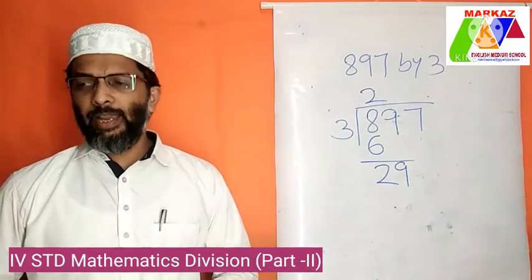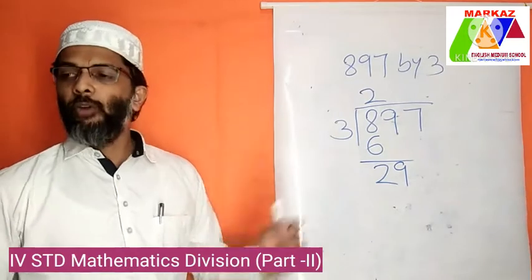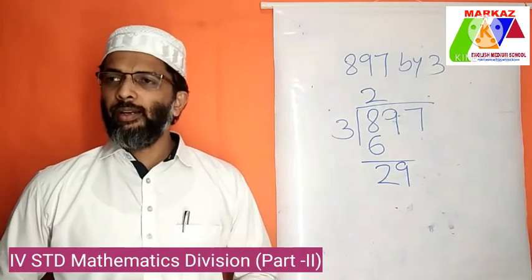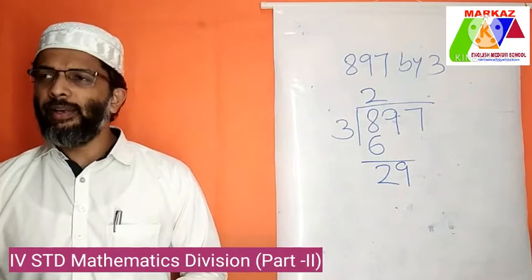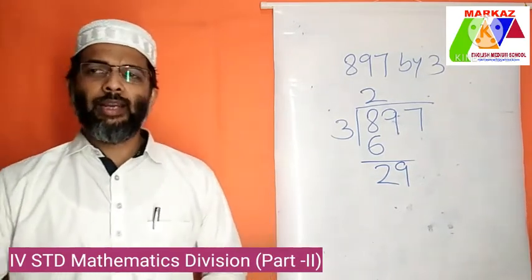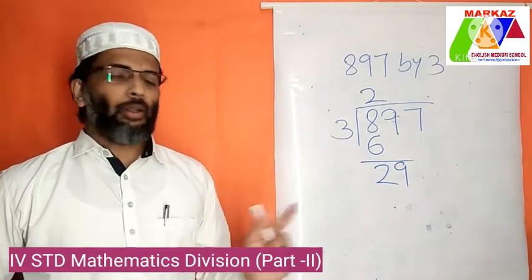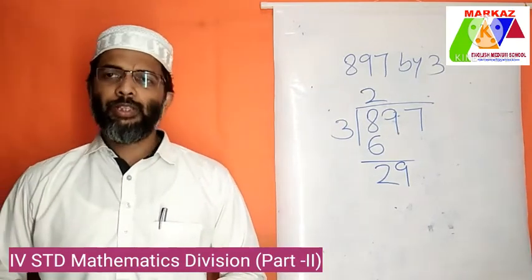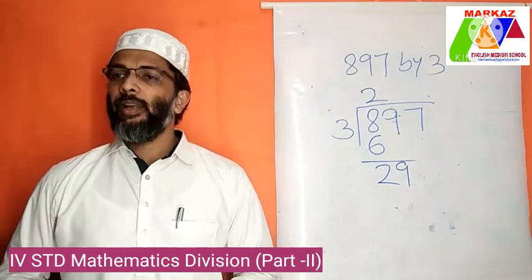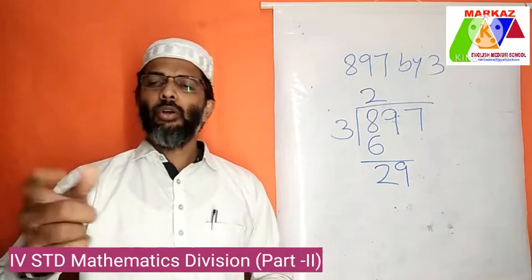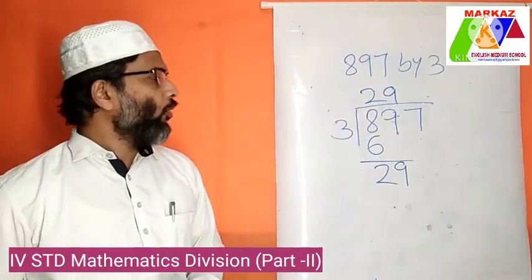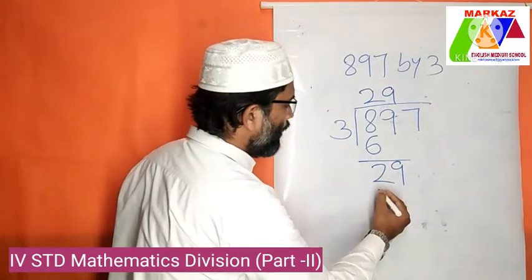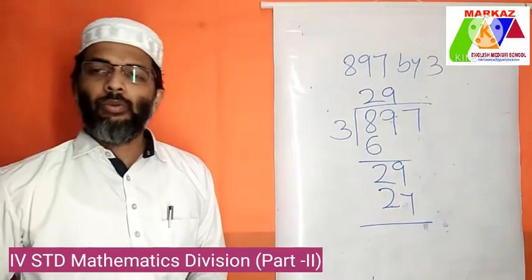Now our dividend is 29. We are repeating the whole process again. 29 divided by 3 — how many 3's will go into 29? 7 threes are 21, 8 threes are 24, 9 threes are 27, 10 threes are 30, which is more than the dividend. So we consider the multiple just before that — 27. 9 threes are 27, so the quotient is 9. Now multiply 9 into 3 to give us 27.